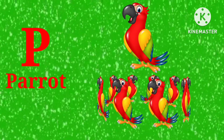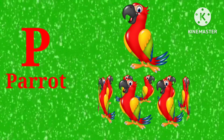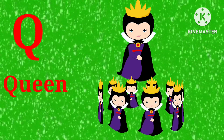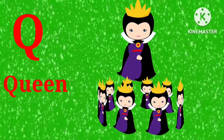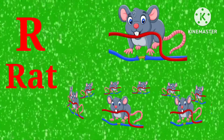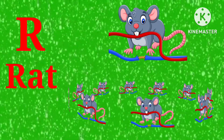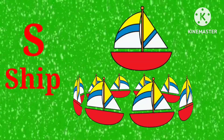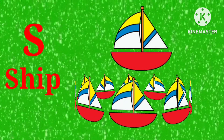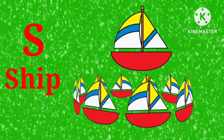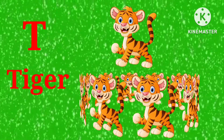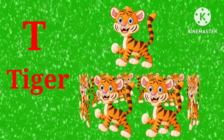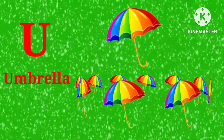P for parrot, Q for queen, R for red, S for sheep, T for tiger.